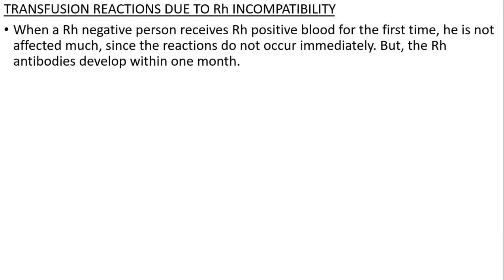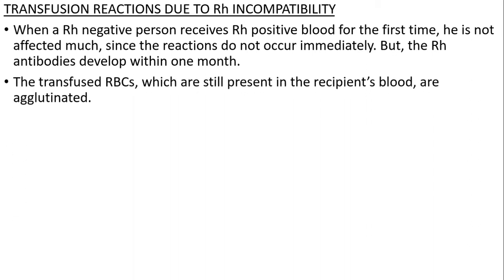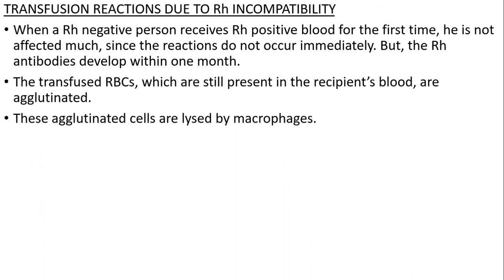Transfusion reactions due to Rh incompatibility: when a Rh-negative person receives Rh-positive blood for the first time, he is not affected much since the reactions do not occur immediately. But the antibodies will develop within one month. The transfused RBCs are still present in the recipient's blood and are agglutinated.